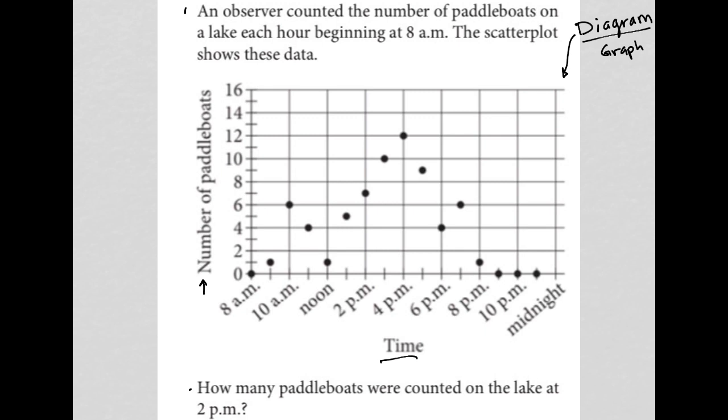The question goes on to say, how many paddle boats were counted on the lake at 2 p.m.? All right, well, 2 p.m. goes along with this data point right here. And that goes with seven paddle boats. So, the answer here is seven.